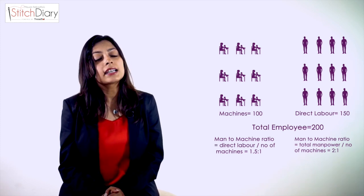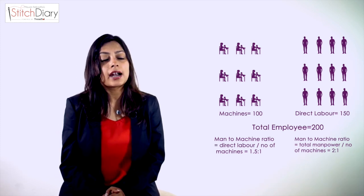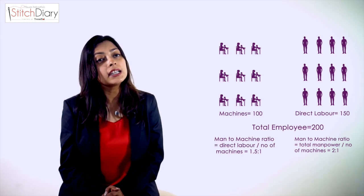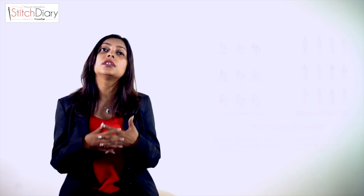And the ratio as per total employees is 200 by 100, or 2 to 1. This measure is taken to understand how much money is being spent on the employees as compared to each machine in the factory.